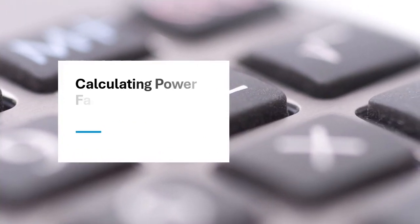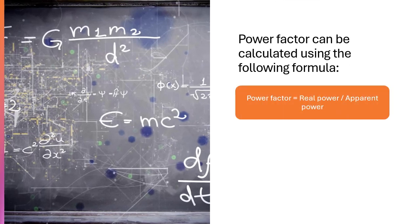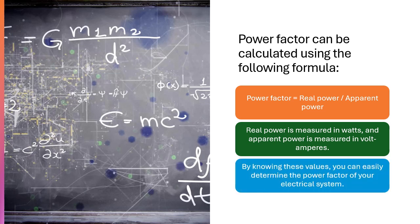Calculating Power Factor: Power factor can be calculated using the following formula - Power factor = Real Power / Apparent Power. Real power is measured in watts, and apparent power is measured in volt-amperes. By knowing these values, you can easily determine the power factor of your electrical system.